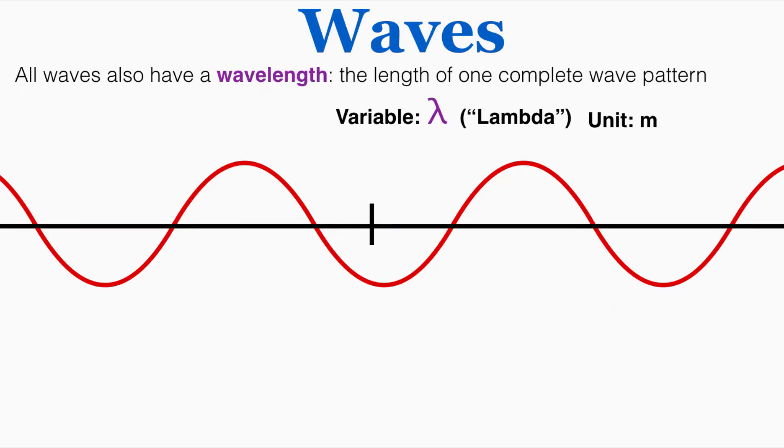All waves also have a wavelength, the length of one complete wave pattern. The variable that we use for wavelength is the Greek letter lambda. It looks kind of like an upside down Y and the unit is meters. One full repetition of a wave looks like this, like one complete sine wave. The horizontal length of this wave is going to be equal to the wavelength of the wave.